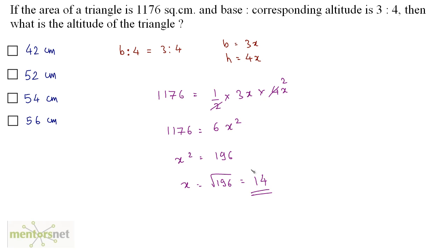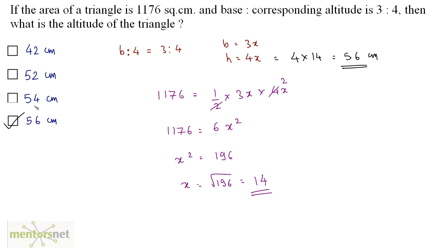We want the height, and height is 4 times x, so that equals 4 times 14, which is 56 centimeters. Option D is the correct answer.